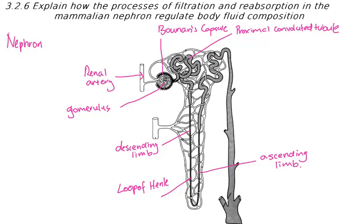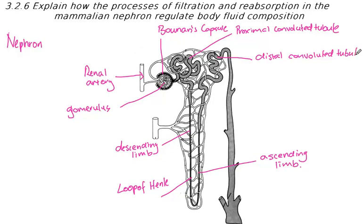Once we get through the loop of Henle, we go into the distal convoluted tubule, and finally into the collecting duct.